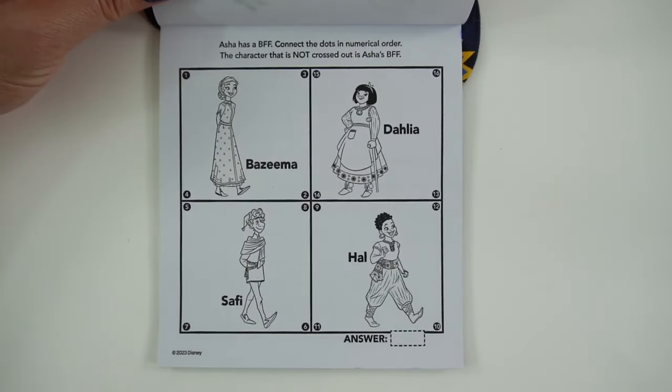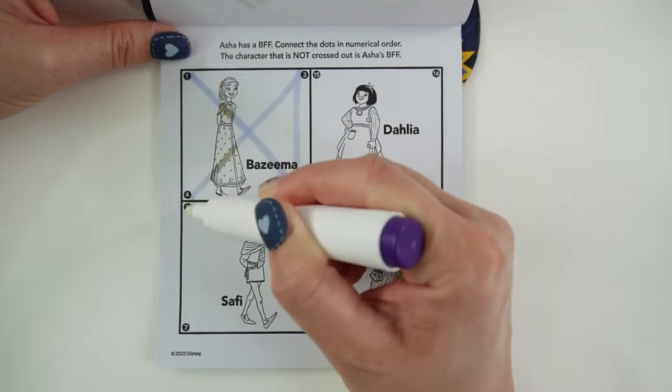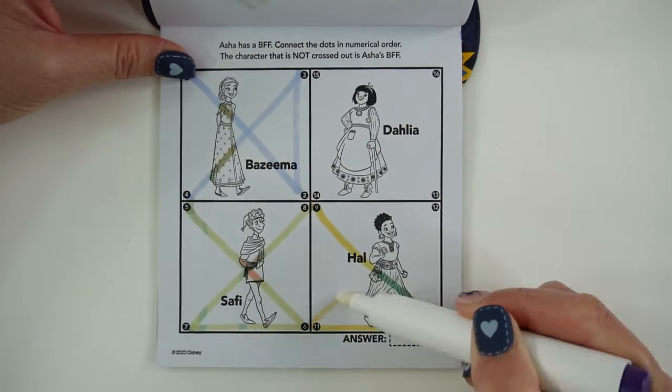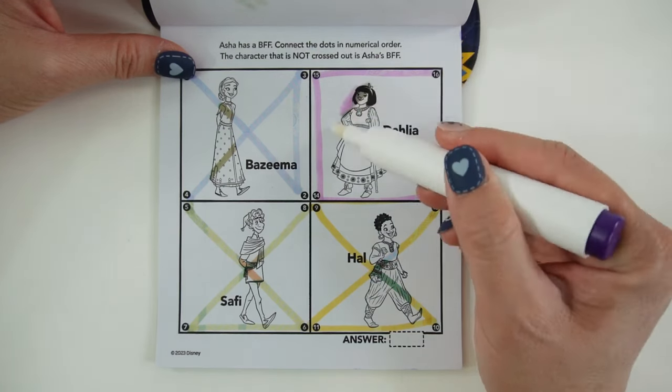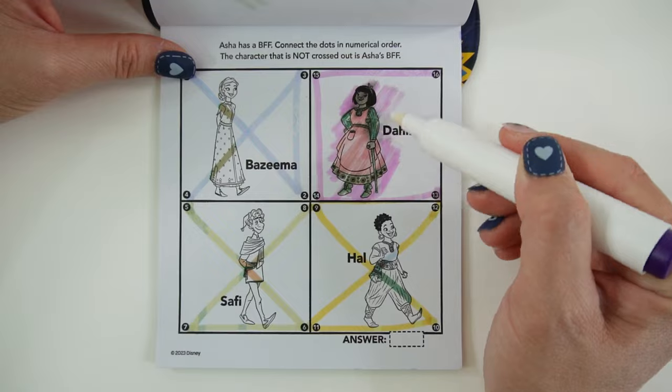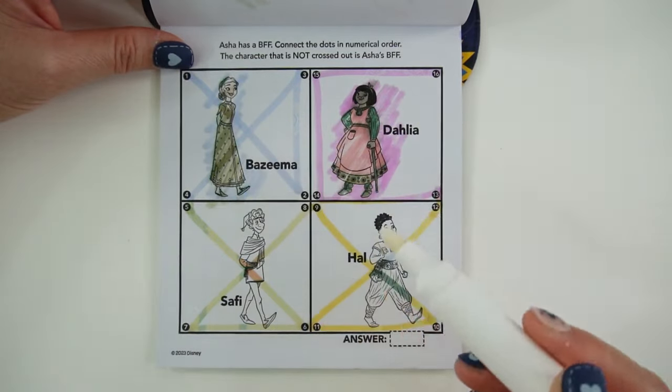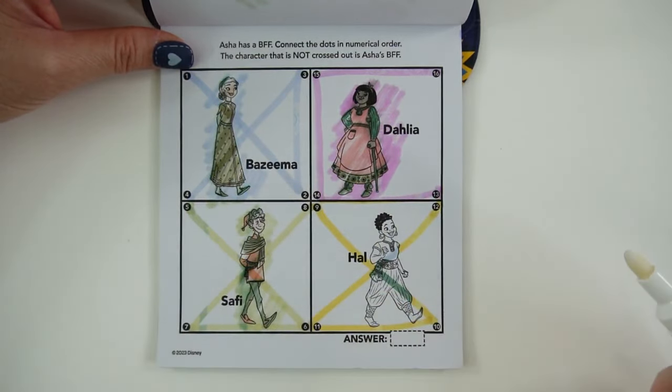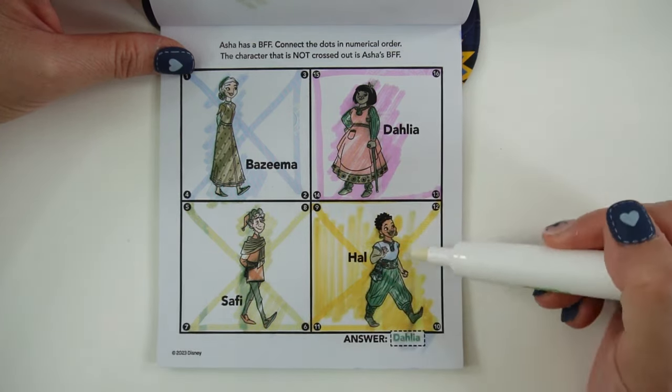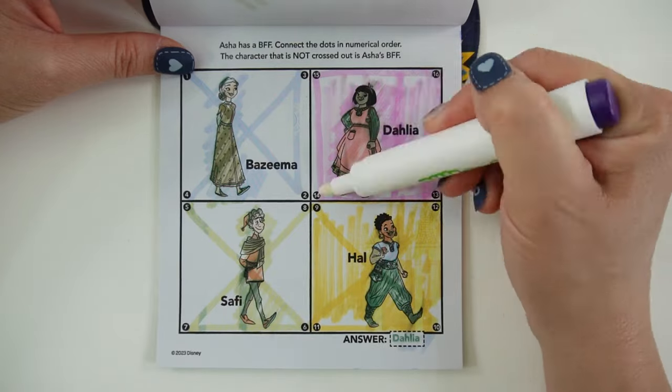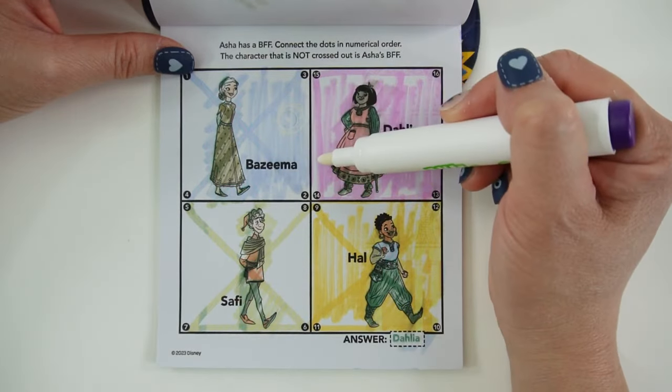It says here, Asha has a BFF. Connect the dots in numerical order. The character that's not crossed out is Asha's BFF. I wonder who it is. And the answer is Dahlia. Here's Dahlia, colored in. Here is Bazeema. Here is Safi. And here is Hal. But where's the wish? The wish is right here.